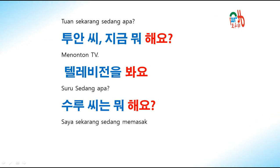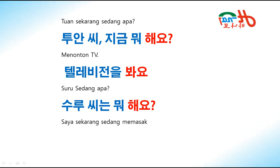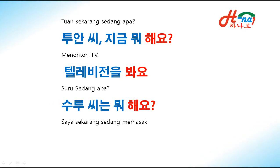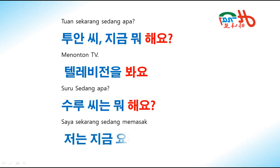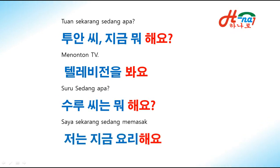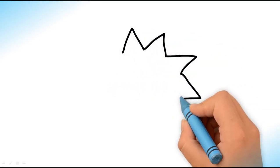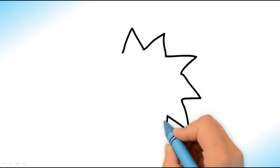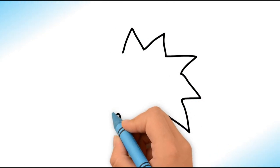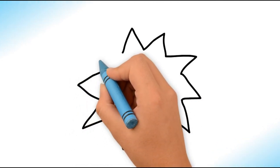Saya sekarang sedang memasak. Bagaimana? 저는 지금 yuri해요. Conen, 지금 yuri해요. Itu tadi contoh-contohnya dari kalimat akhiran informal.